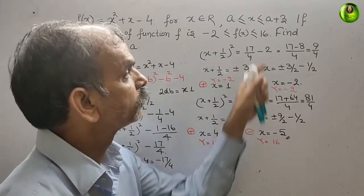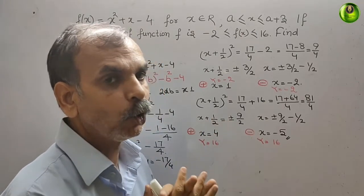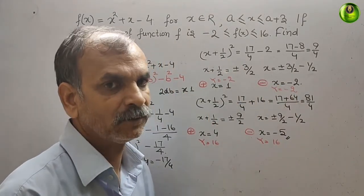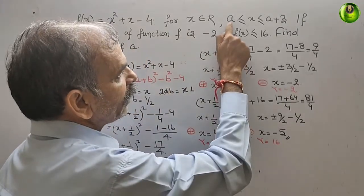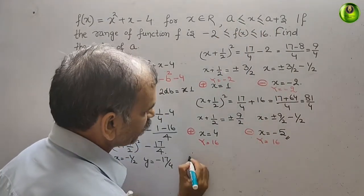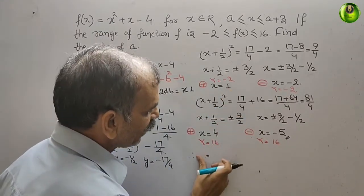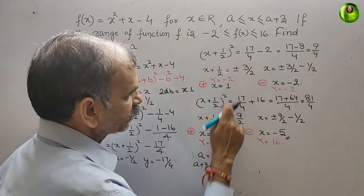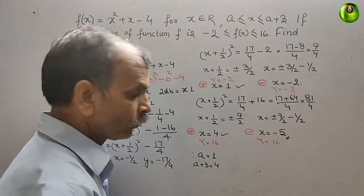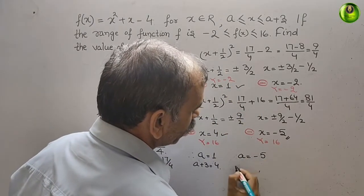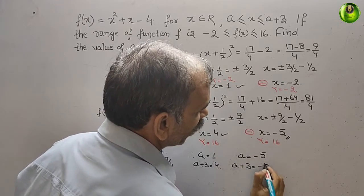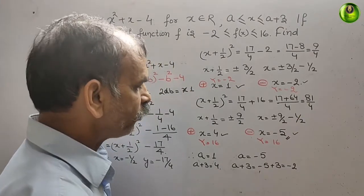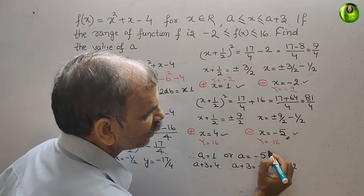To find 'a', we look at the domain only. The domain is [a, a+3]. If a = 1, then a + 3 = 4 — this matches x = 1 and x = 4. If a = -5, then a + 3 = -5 + 3 = -2 — this matches x = -5 and x = -2. Therefore, a = 1 or a = -5.